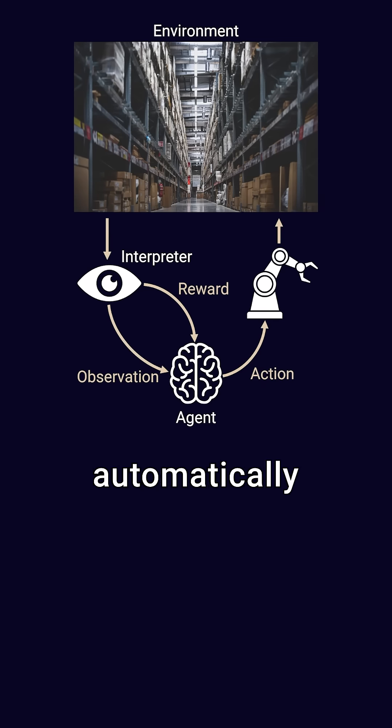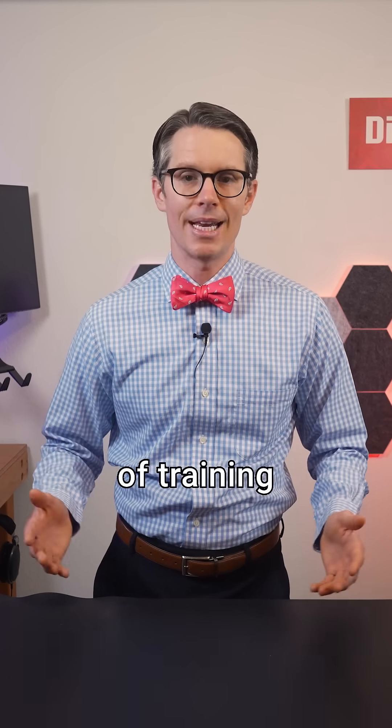The agent would automatically update its internal parameters based on these rewards and attempt the task again. These automatic updates are just like training other types of machine learning models. And this is how ideally the agent gets better over time.